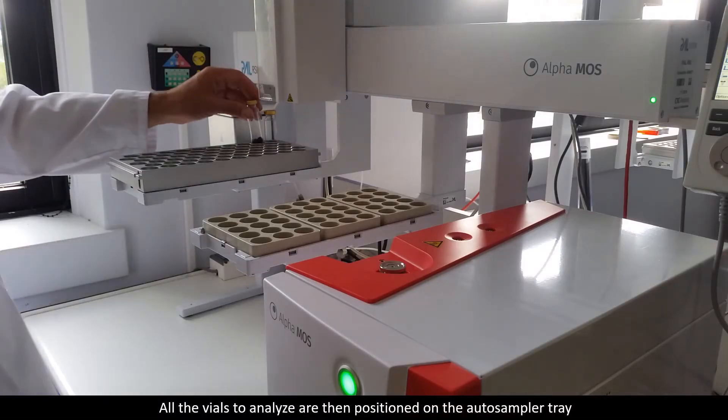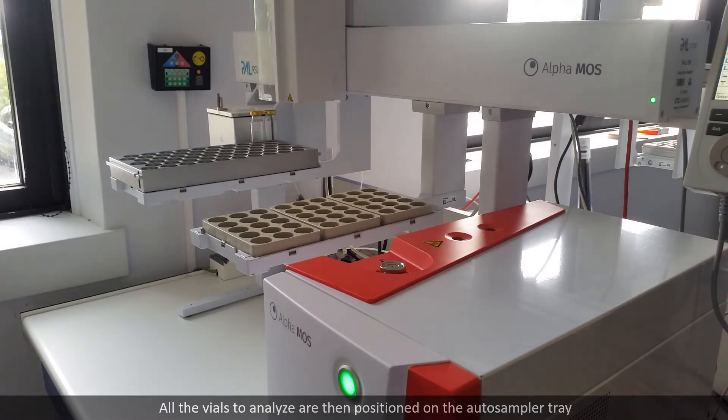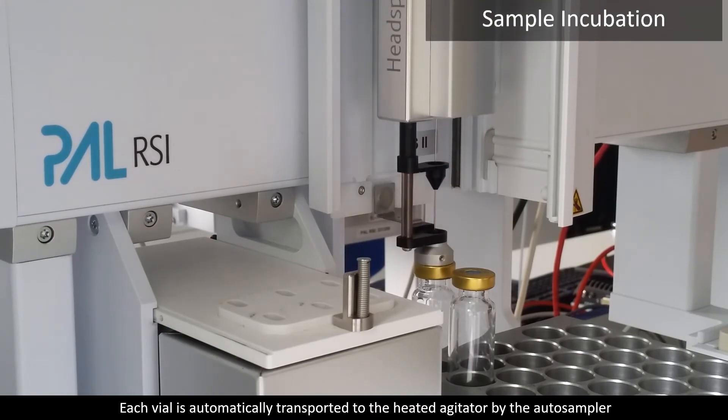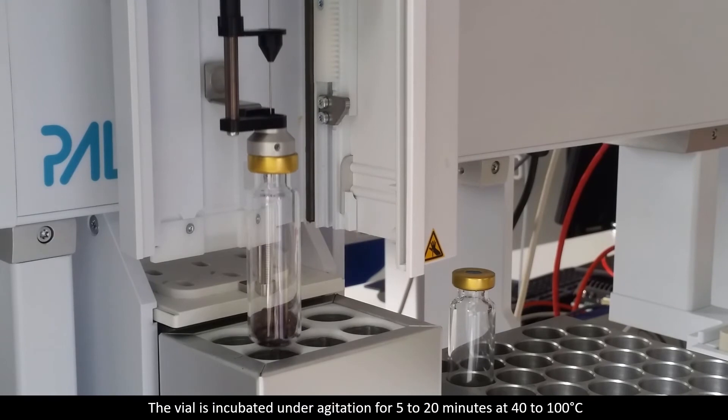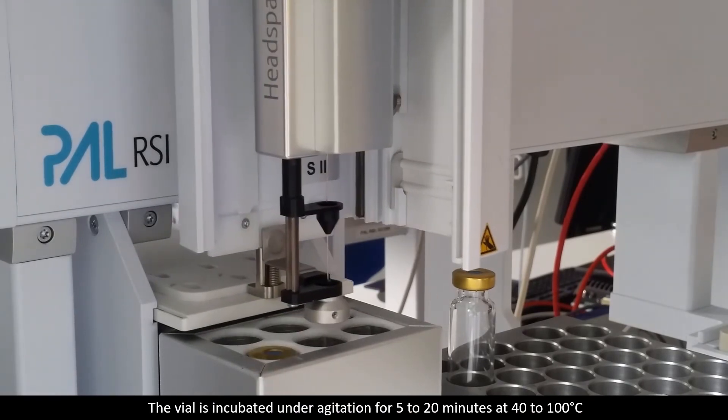All the vials to analyze are then positioned on the autosampler tray. Each vial is automatically transported to the heated agitator by the autosampler. The vial is incubated under agitation for 5 to 20 minutes at 40 to 100 degrees Celsius.